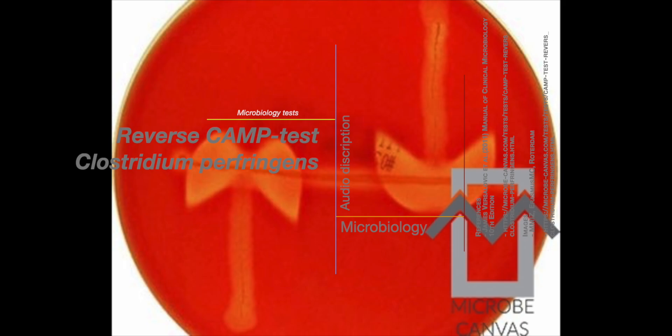This distinctive pattern is a result of the synergistic effect of the alpha toxin and CAMP factor on red blood cell lysis.